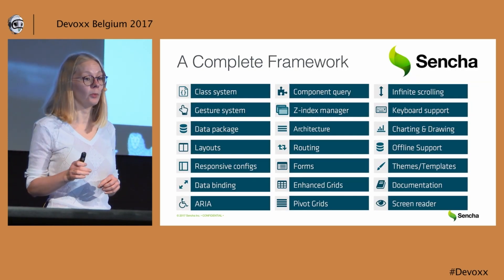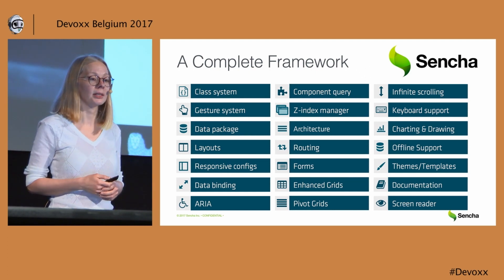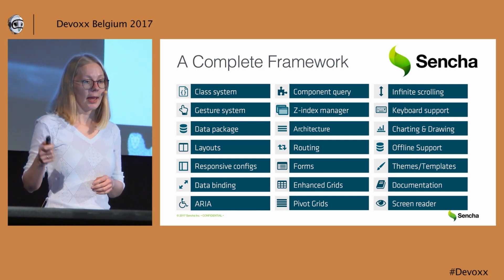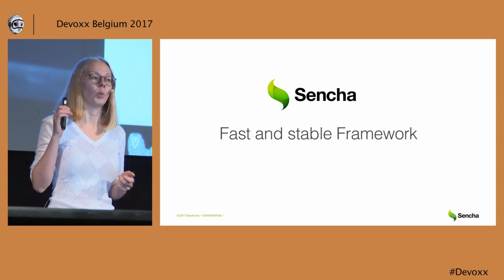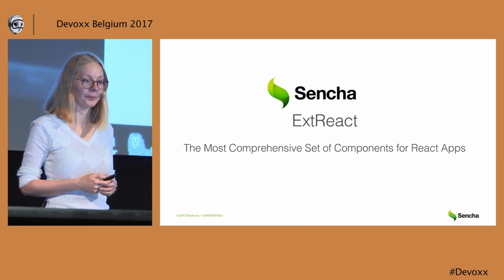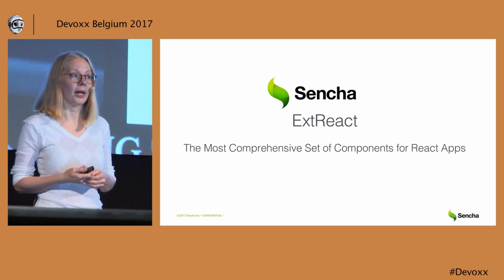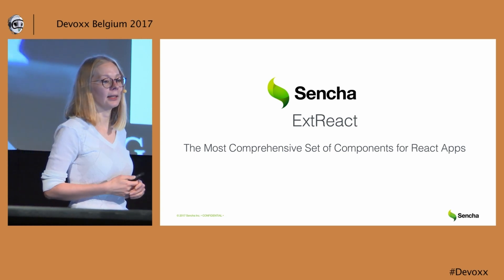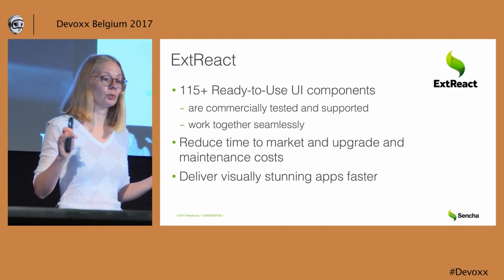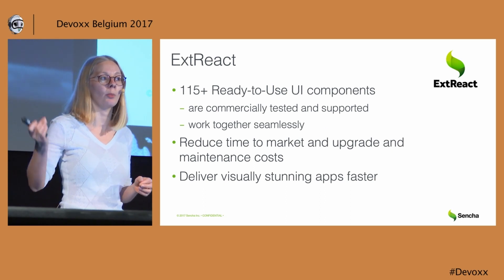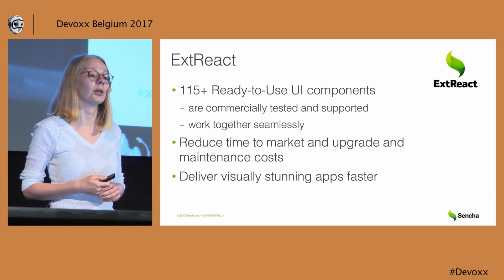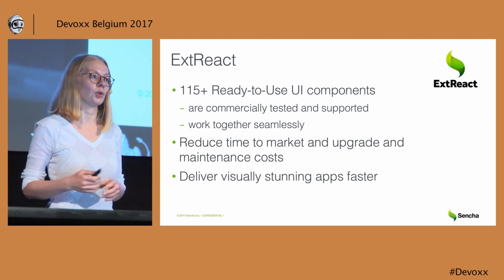Ext.js is a full framework — it includes everything you may need to develop enterprise applications: class system, data package, architectural patterns, components, accessibility support, data binding, et cetera. It's a fast and stable framework, 10 years old, and we run about 10,000 tests every day. And I have good news for React developers: if you want to use ext.js components, you can now do it using our new product, ext.react — a component library for React with more than 100 ready-to-use UI components, perfectly compatible, tested, supported by Sencha, and optimized for huge data sets.